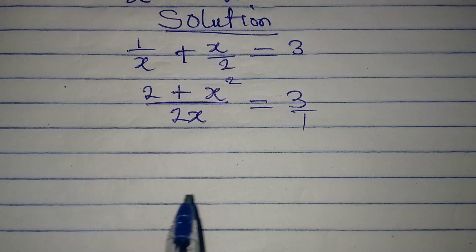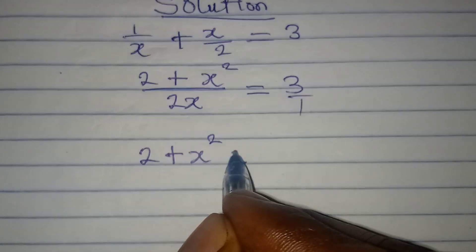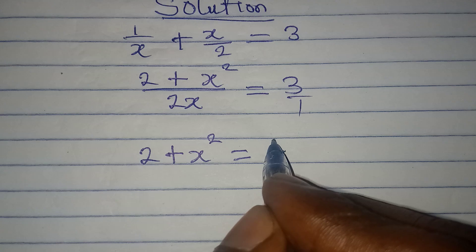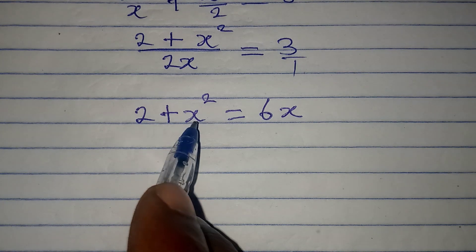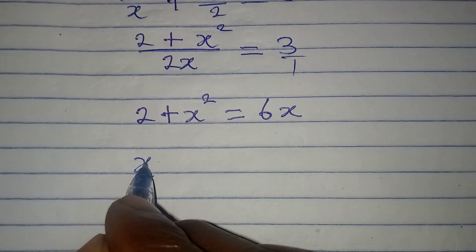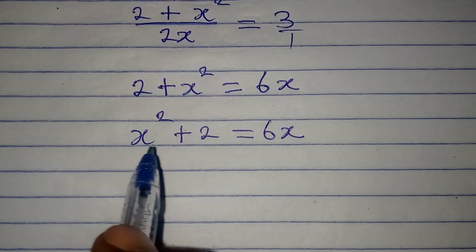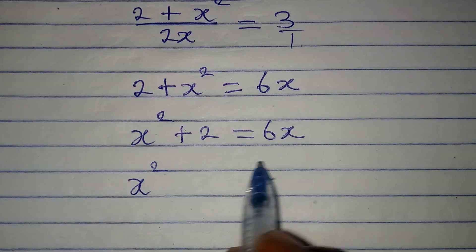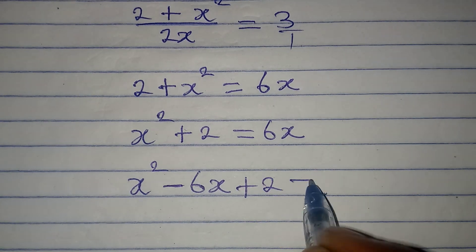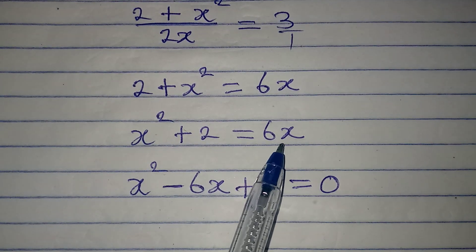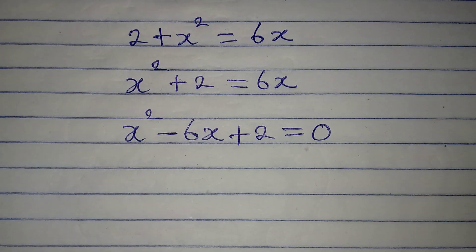From here what we will do is cross multiply, because this is over 1, and when I do that I'm going to have 2 plus x squared equal to 2x times 3, which is 6x. So I can arrange this so I have x squared plus 2 equal to 6x. Now I want to bring x squared and 6x together, so it becomes x squared minus 6x plus 2 equals zero, because 6x has been moved to the left.